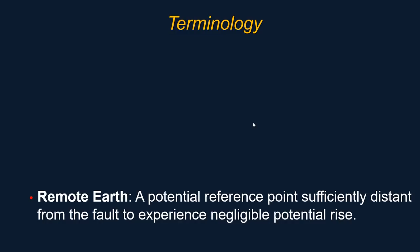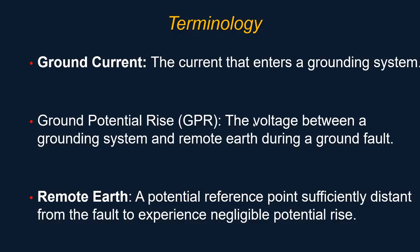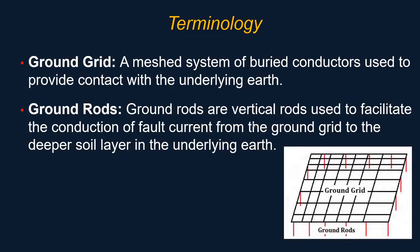Let's continue on with terminology. Ground current is the current that enters a grounding system. We're also going to talk about ground potential rise or GPR — that is the voltage between a grounding system and a remote earth during a ground fault. Remote earth is a potential reference point sufficiently distant from the fault to experience negligible potential rise. A ground grid or ground mat is a mesh system of buried conductors used to provide contact with the underlying earth. Grounding rods are vertical rods used to facilitate the conduction of fault current from the ground grid to the deeper soil layer in the underlying earth.